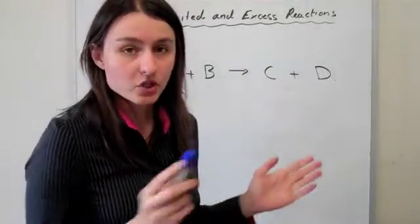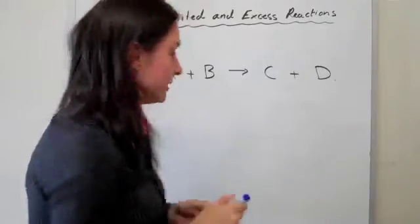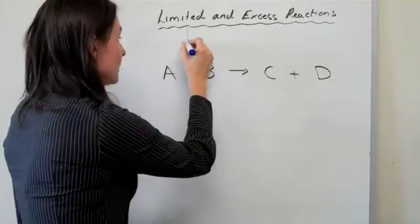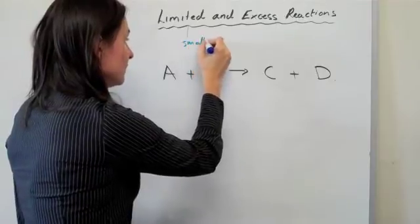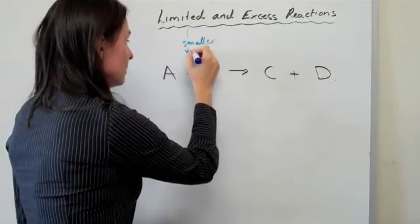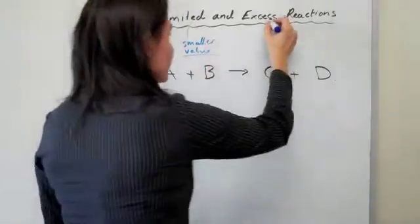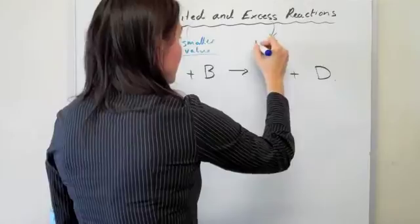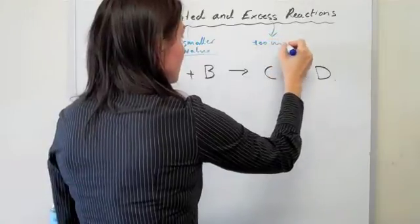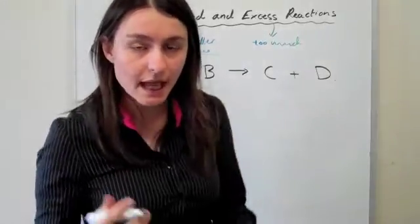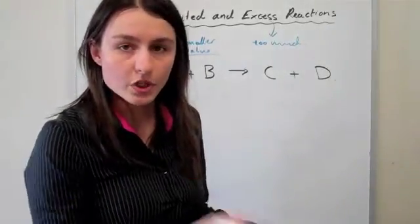We need to learn how to figure out which one's limiting. Limiting is the one that's going to be the smaller amount, smaller value, so maybe it's just less of it that you have. Whereas the excess is the one that's in too much.